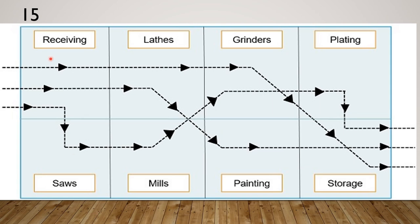For number 15, as you can see, a product may pass through different routes or paths before arriving at the final product. Determine the type of production system shown here in number 15, and knowing the production system, identify the layout applicable — is it product layout, process layout, or fixed position layout?